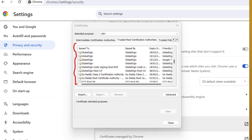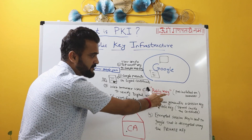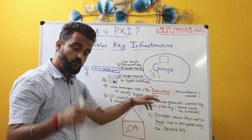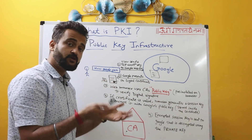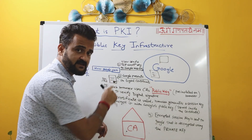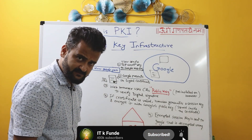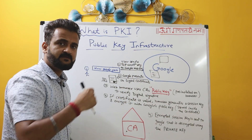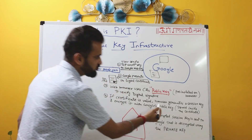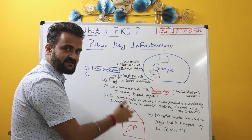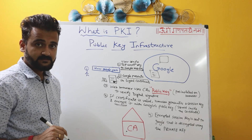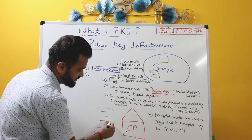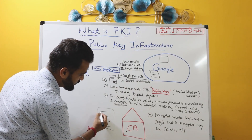The web browser already has this particular certificate authority registered in the browser, and the browser already has the public key of this certificate authority. In step three, the web browser will use that public key to verify the digital signature — it will decrypt using the public key because it was signed using the private key. At step four, if the certificate is valid, the browser will generate a new session key between the browser and Google. When the session key is being established, the initial trust is getting set up. That session key will then be generated and encrypted.